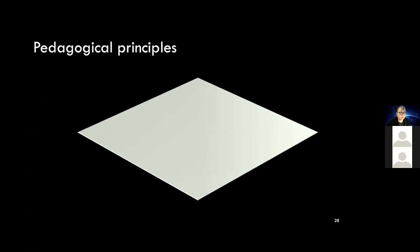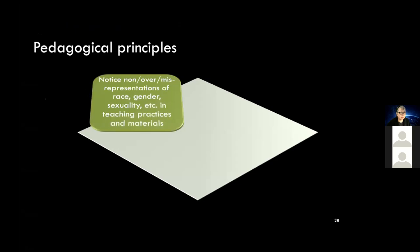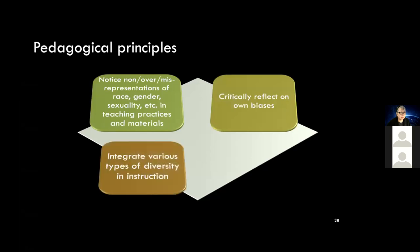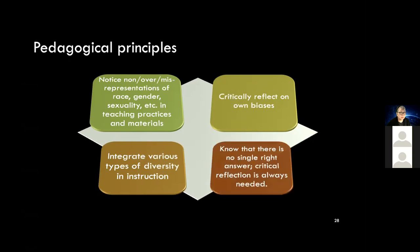So what kind of pedagogical principles do we need to consider in teaching? Here I will propose some ideas in terms of pedagogical principles and anti-racist education. So as for pedagogical principles, first, in our teaching practices and materials, it's necessary for us to notice how certain race, gender, sexual orientation, language varieties and so on, are not represented, over-represented, or misrepresented. Second, we need to critically reflect on our own biases. And third, we must strive to integrate the various types of diversity, including race, ethnicity, gender, sexual orientation, and so on in instruction. And fourth, we need to know that there's no single right answer to all these difficult issues and questions. Therefore, critical reflection is always required.